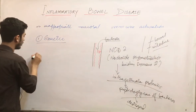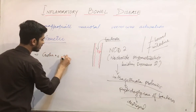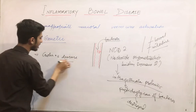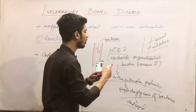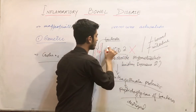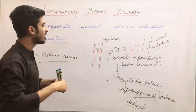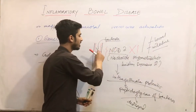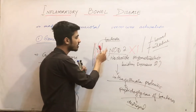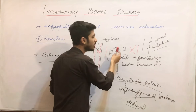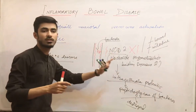In Crohn's disease, there is a loss of function mutation of the NOD2 gene — meaning the NOD2 gene is lost. When there is mucosal damage and bacteria tries to enter and invade the mucosa, there will be no NOD2. When NOD2 is not present, bacteria will easily enter into the cell.